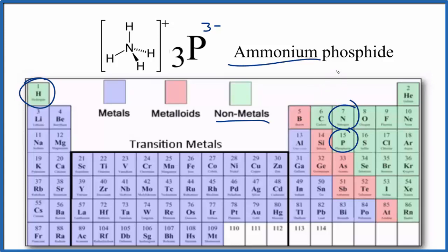This is Dr. B answering the question whether NH4 3P ammonium phosphide is ionic or covalent. It is ionic. Thanks for watching.